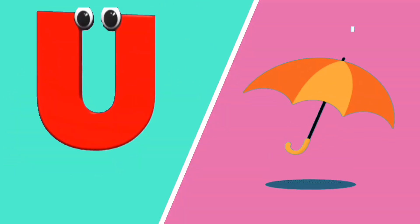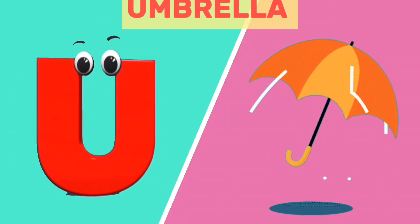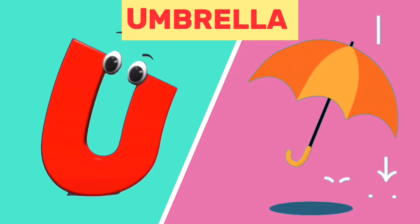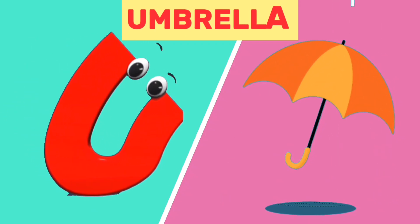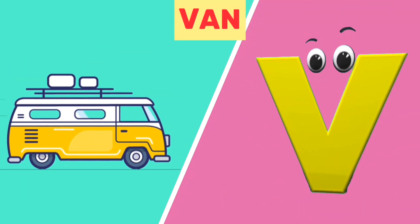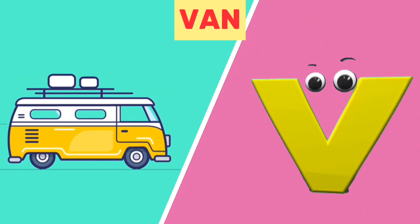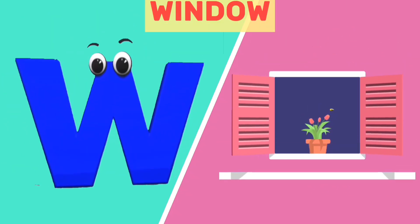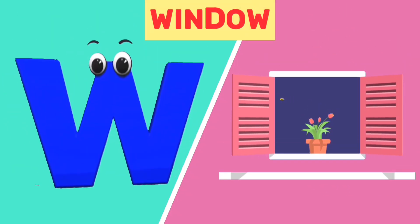U is for umbrella. U, umbrella. V is for van. V, van.